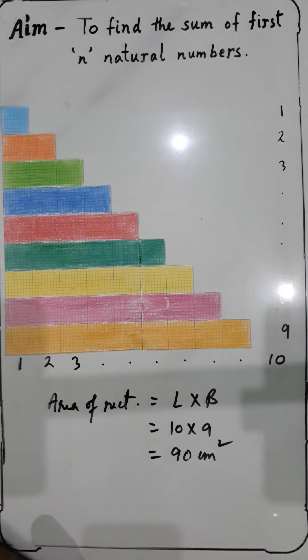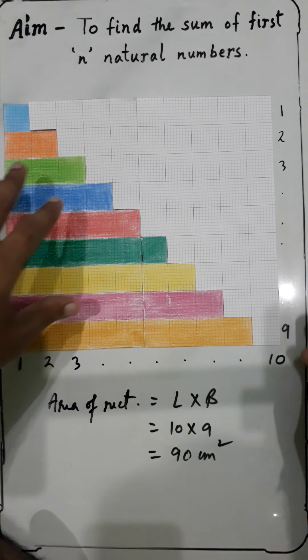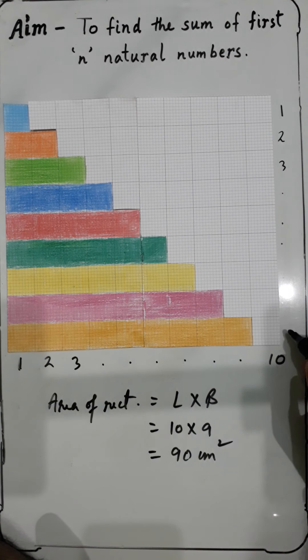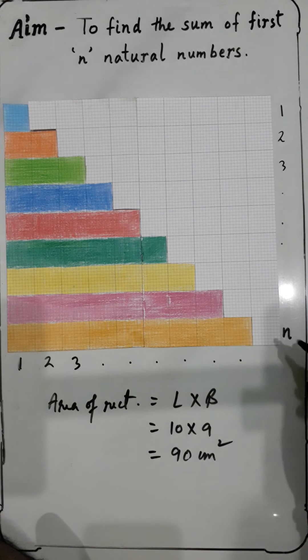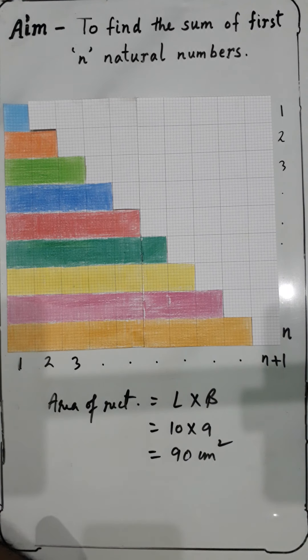So that is why we can now clearly derive this formula. If there is any sum of natural numbers and this will be n, then it is obvious that it is one more than that, so it will be n plus 1.